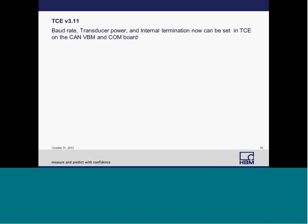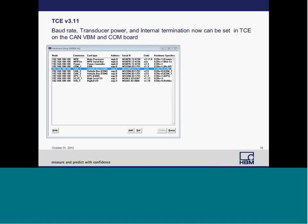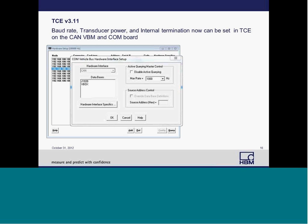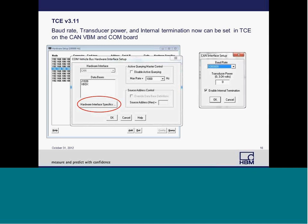To set up the eCAM layer in TCE, go to Hardware Setup, find the CAN layer you want to modify and double-click on it. A dialog box will appear where you can select Hardware Interface Specifics, which brings up another dialog box where you can change your baud rate, your transducer power, or enable internal termination.